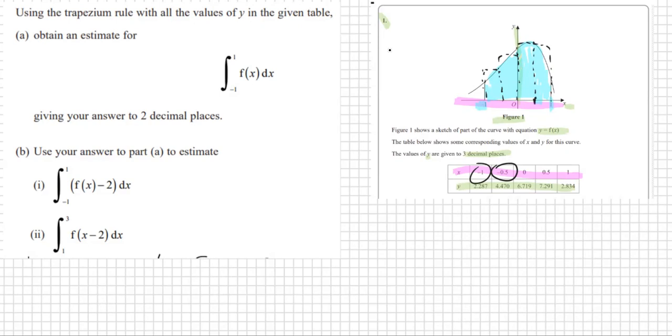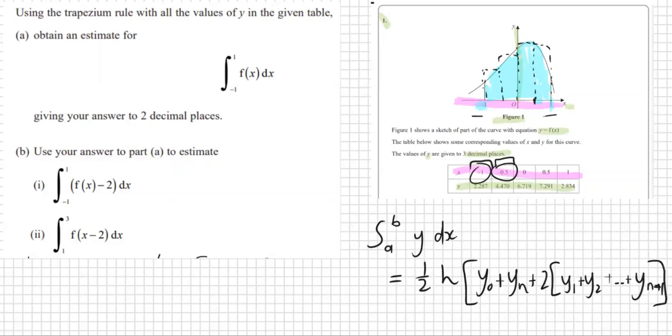The formula for the trapezium rule is for any integral from point a to b, so our point a was minus 1 and our point b is 1. If you want to integrate any function y and all its little bits dx, is equal to a half times height, where the height is the distance between the x's. Then you take all your y's, so first your y0 plus the last y, which is yn, plus two times all the other y's: y1 plus y2 plus all the ones in the middle, and then the second last y, which is yn minus 1.